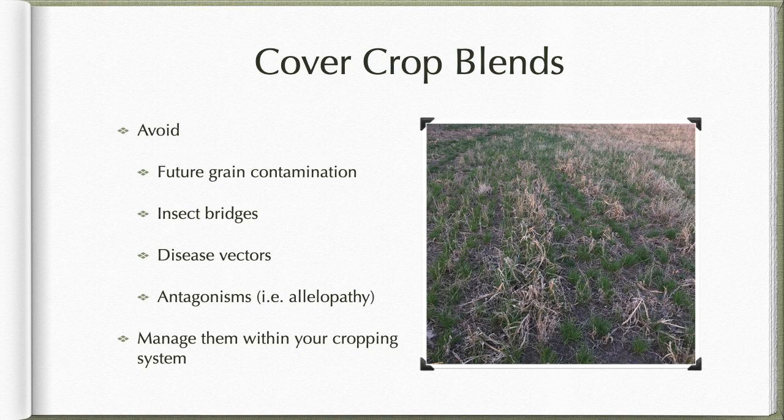Disease vectors are another thing to avoid. Growing lots of brassicas in a tight canola rotation — whether an oscillation or rotation — can potentially build up disease pressure like rhizoctonia, maybe sclerotinia if it gets to the flowering stage. So we want to look at rotation and make sure we're not over-utilizing one of the functional plant groups.